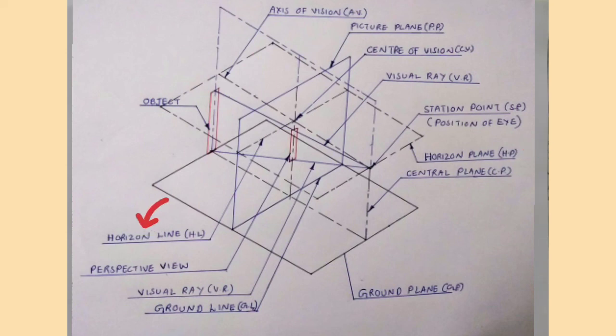Horizon line is the line of intersection of horizon plane with the picture plane. It is parallel to the ground line.